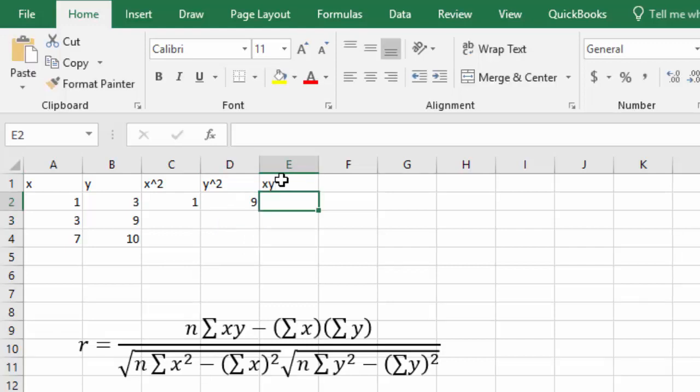We can do the same thing for the x, y's. We'll say equals. This time we'll click the x, times, which is shift 8, and then click the y, and you'll see it's going to multiply x times y together.